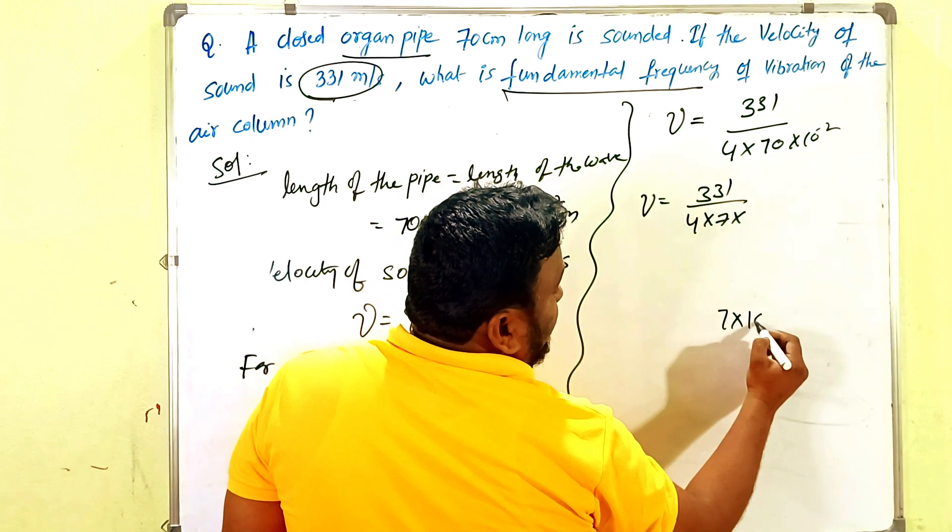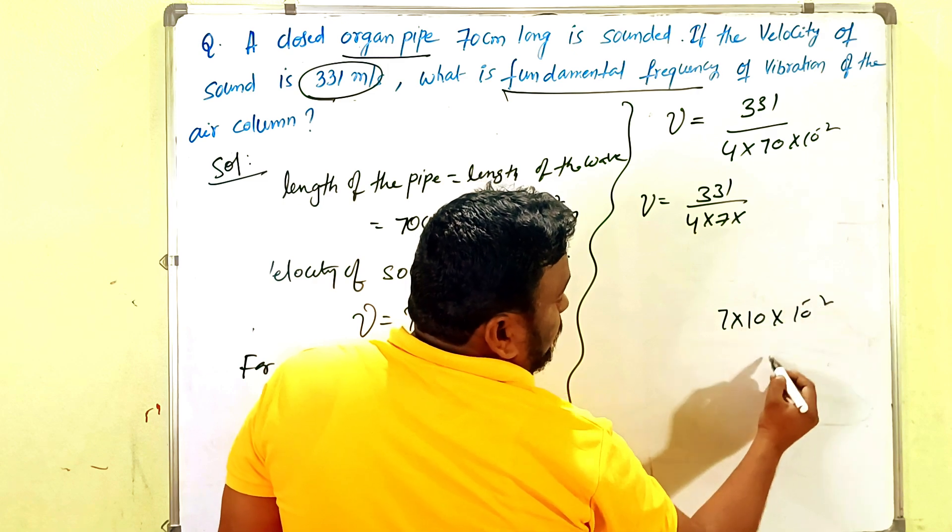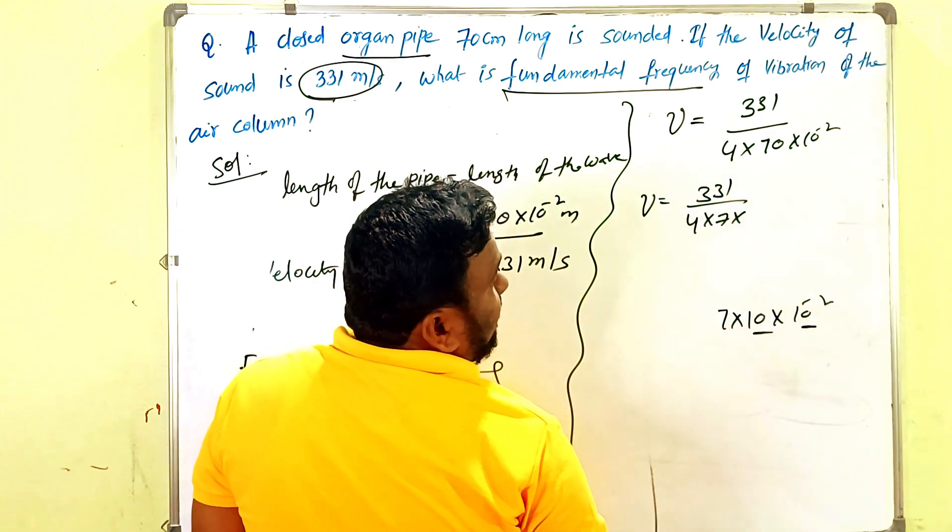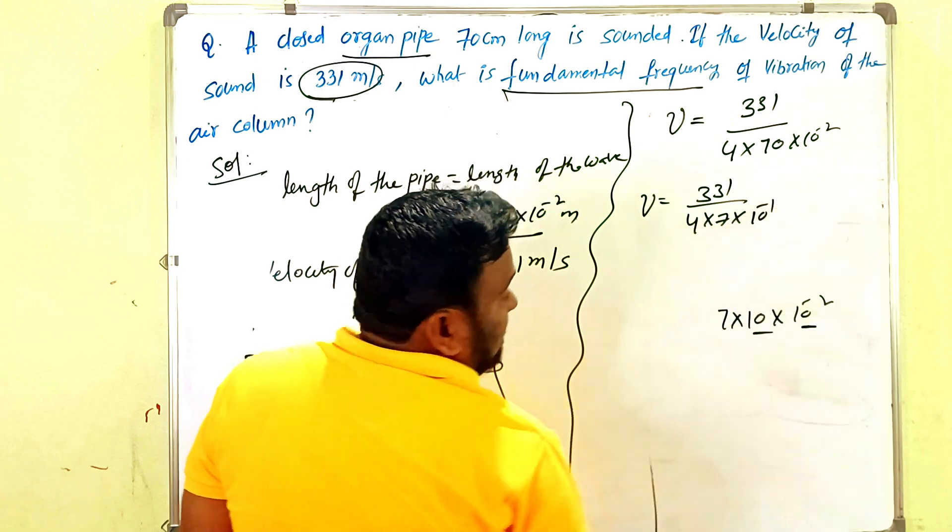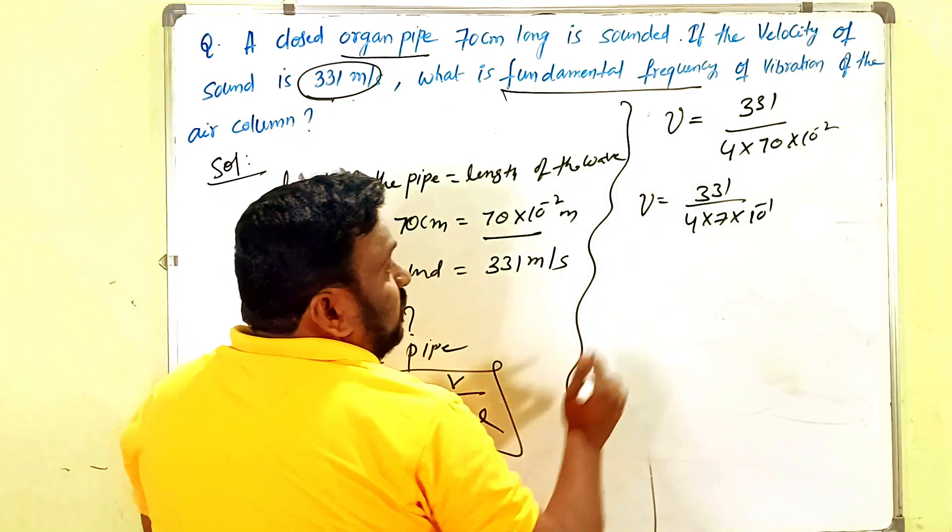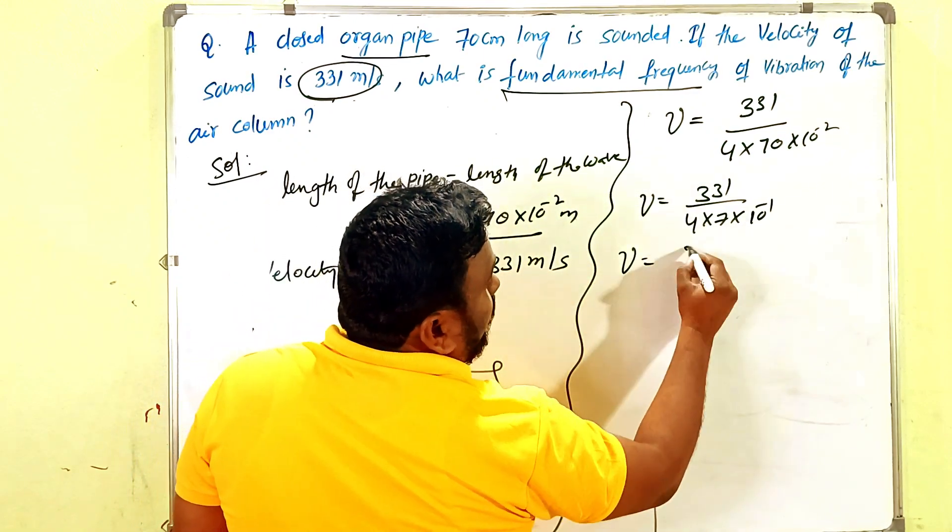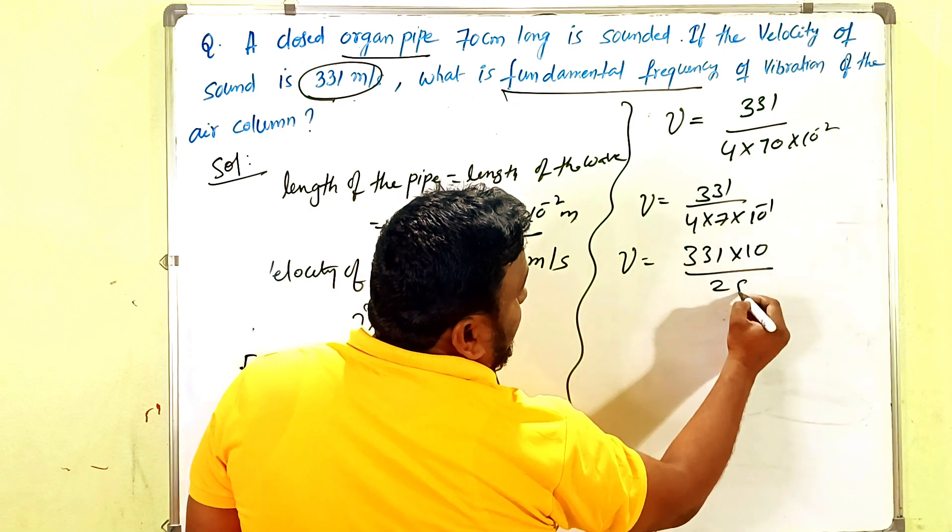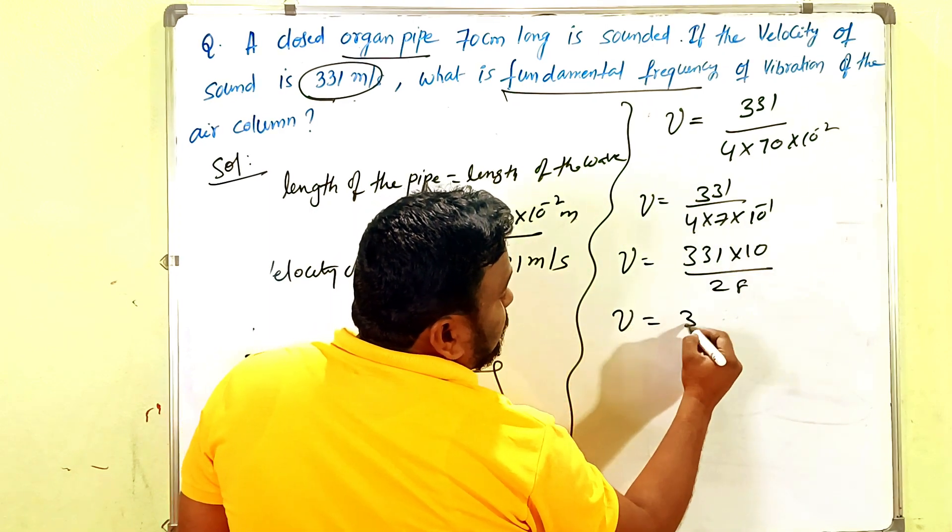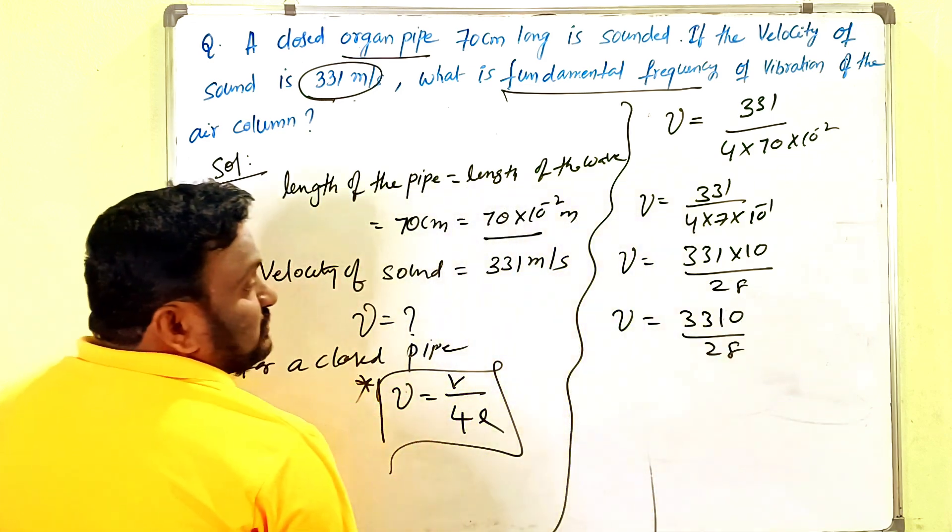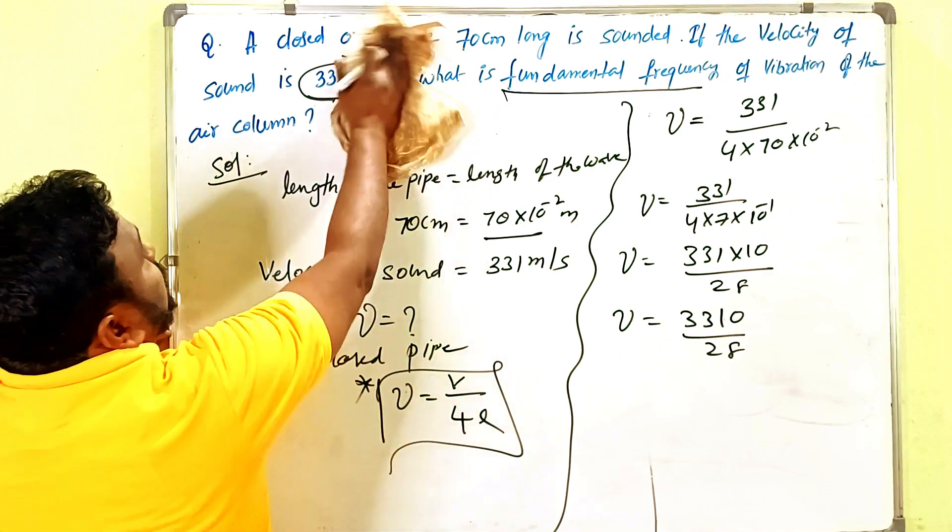70 is 7 × 10. So when bases are equal, we divide the powers: 10^1 × 10^-2 = 10^-1. You can take that into the numerator. Now you get (331 × 10)/(4 × 7). 4 × 7 = 28, so ν = 3310/28. Now do the division.